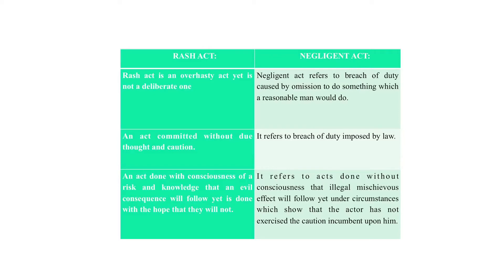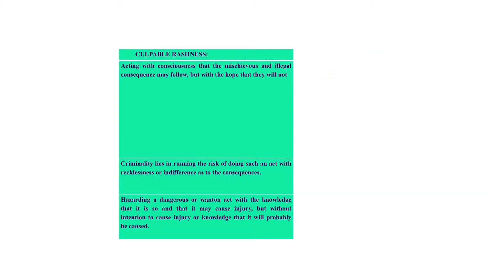Negligence also refers to breach of duty imposed by law — a duty imposed upon a person either by an express or implied provision of law. Negligence refers to acts done without consciousness that illegal or mischievous effect will follow, yet under circumstances which show that the actor had not exercised the caution incumbent upon him. Culpable rashness, on the other hand, refers to acts done with consciousness that the mischievous and illegal consequence may follow, but with the hope that they will not. The criminality in a rash act lies in running the risk of doing such an act with recklessness or indifference towards the consequence.